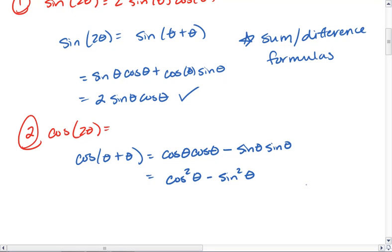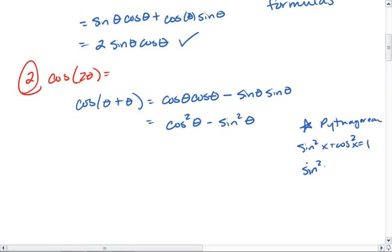We also know from our Pythagorean identities that sine squared plus cosine squared equals 1, which we can rearrange to tell us that sine squared equals 1 minus cosine squared, and that cosine squared equals 1 minus sine squared.